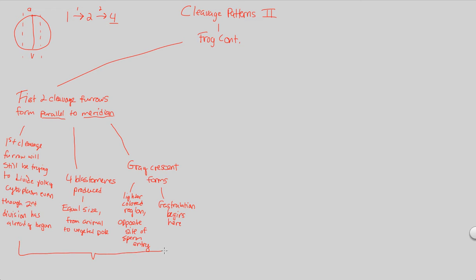These events are hard to imagine, so take a look at figure 47.7, which does a good job of showing this in a visualized way. After the first two cleavages, it may not seem like much has happened in terms of yolk effects. The big difference — the huge consequence of yolk — is going to be seen in the third division.